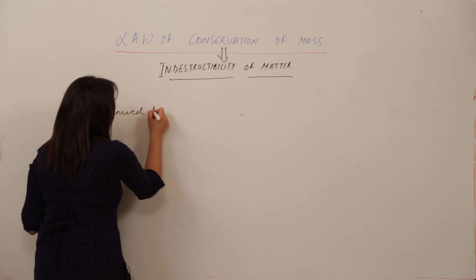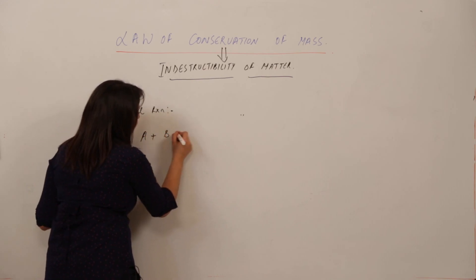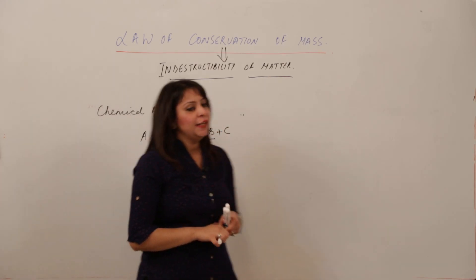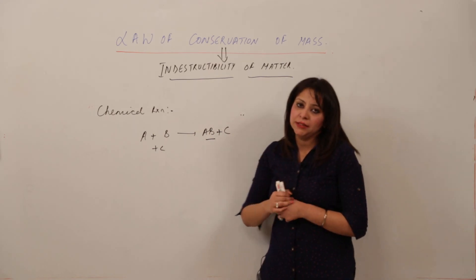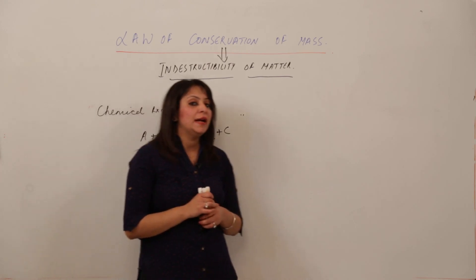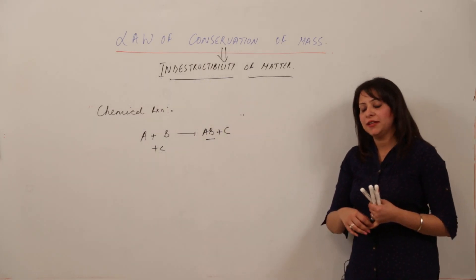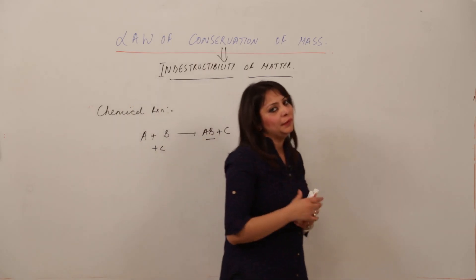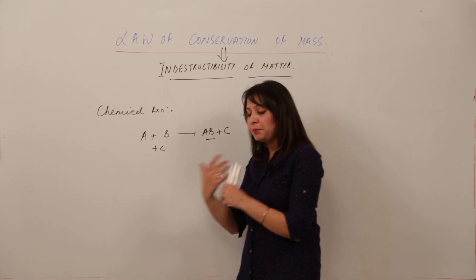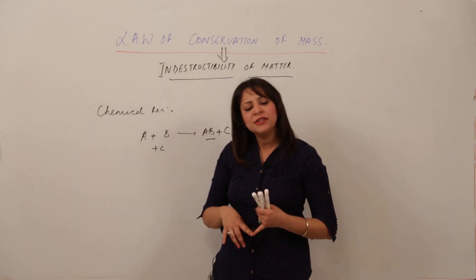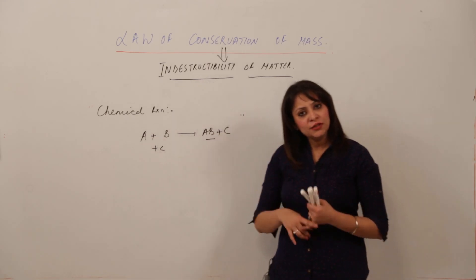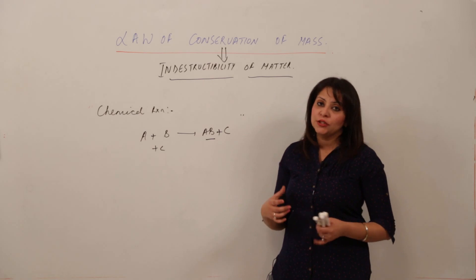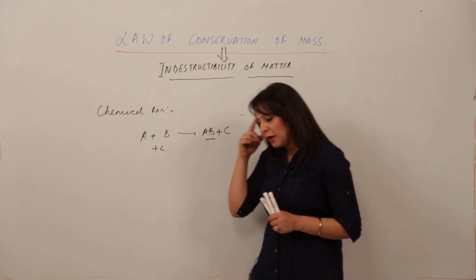A chemical reaction is a process in which some substances are mixed and some new substances are formed. For example, when you make tea: you take a pan, add water, milk, tea leaves, and sugar, then supply heat. It turns into tea — you can no longer see the tea leaves, milk, or water separately. They all unite to form a single substance. That is a chemical reaction.